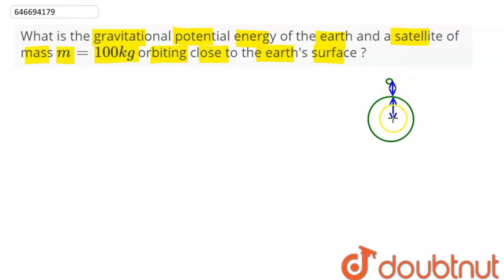So the height of the satellite from the center of the earth is approximately equal to R, the radius of the earth.